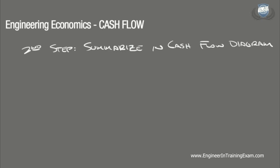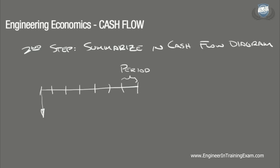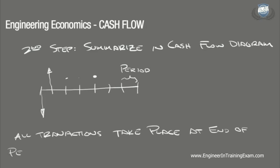The next step is to summarize these expenses and credits in a graphical form on what we call a cash flow diagram. A cash flow diagram will allow us to capture the magnitude, type, and timing of the individual transactions over the period of the project, helping us form the basis for an engineering economic analysis. A cash flow diagram is nothing more than a horizontal line segmented with marks representing a defined period of time. Each time a transaction takes place, a vertical line is drawn at that specific point in time. All transactions are assumed to take place at the end of the period in which they occur. This is known as the end-of-the-year convention.